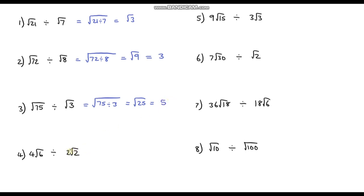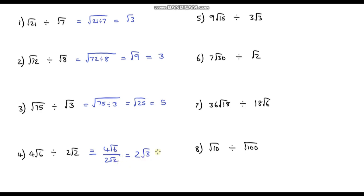Question 4: 4 root 6 divided by 2 root 2. Writing this as a fraction — 4 root 6 over 2 root 2. Deal with the numbers first: 4 divided by 2 is 2. Then root 6 divided by root 2 is root 3. So the answer is 2 root 3.